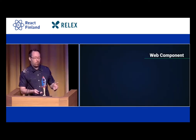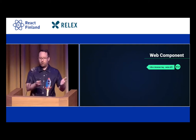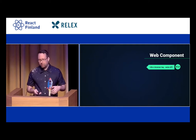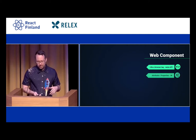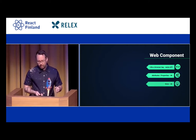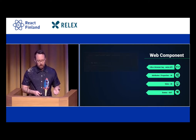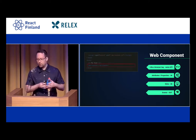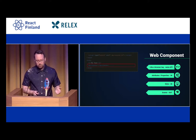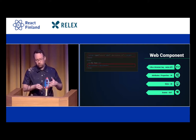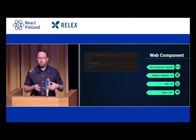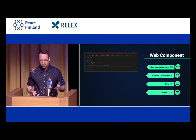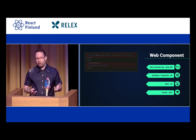Now let's compare with Web Components. Web Components work exactly the same as a browser tag — the same API. That means we have attributes and properties going in, slots that can also go in, and events going out. As a user, to use such a component you basically just put the tag in HTML and it's there. To make sure the browser knows what to put in there, you load the code — a single script tag. Just two lines and you get the same functionality.